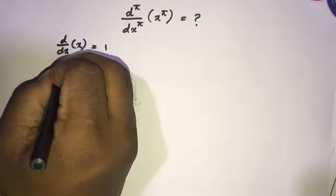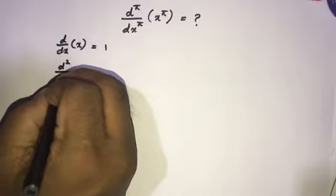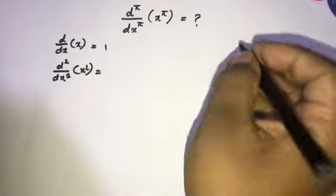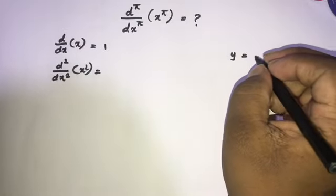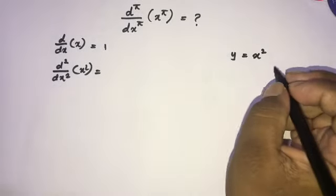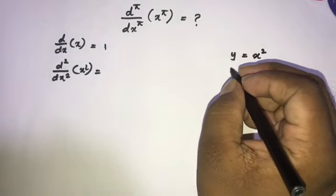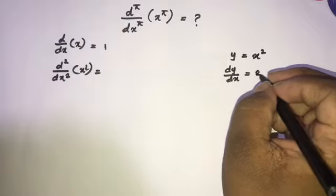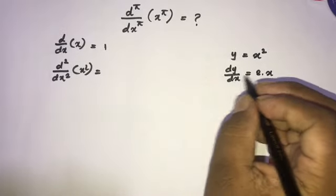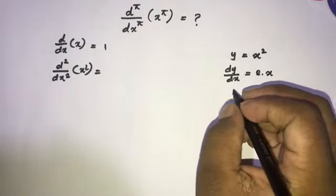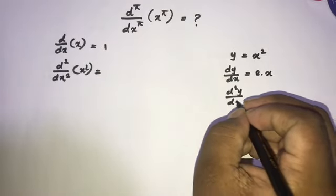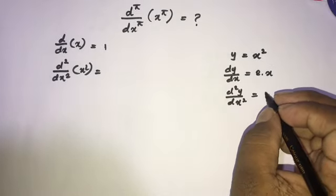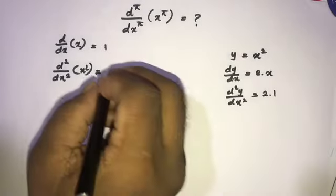Next, I am going to take the second derivative of x squared. So y is equal to x squared. Differentiating with respect to x: dy/dx is equal to 2 times x. Differentiating again, the second derivative of y is equal to 2 times 1.